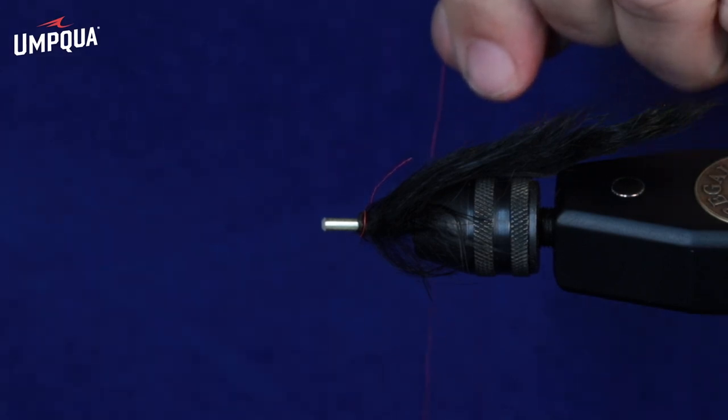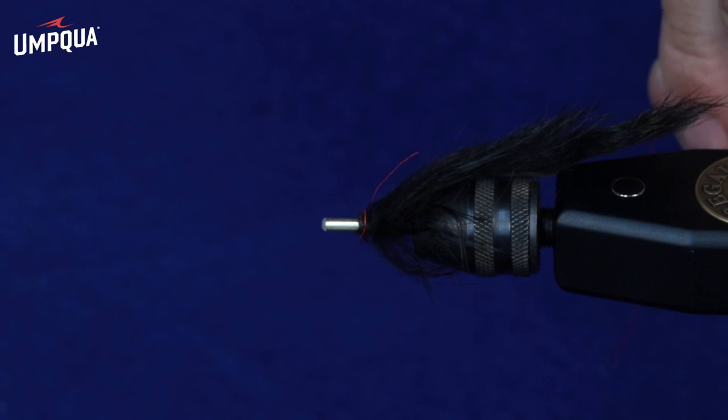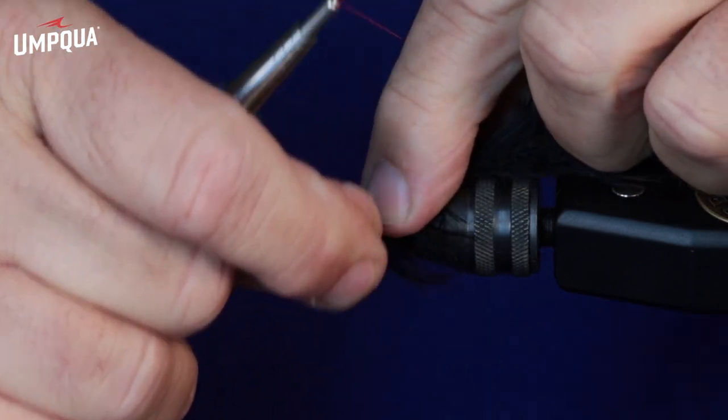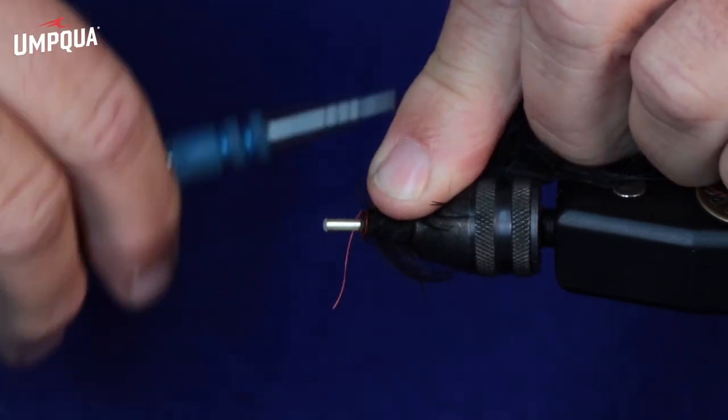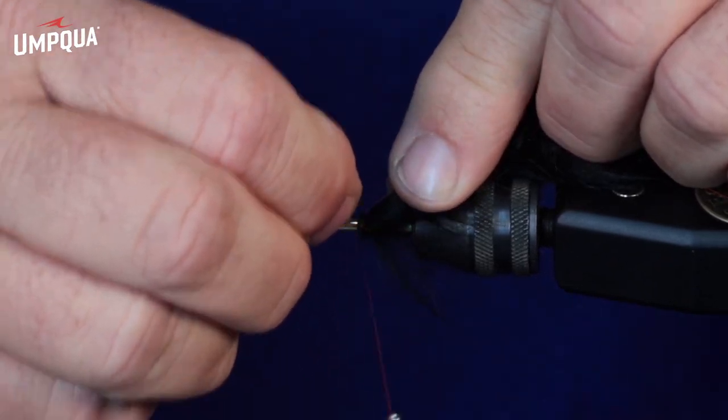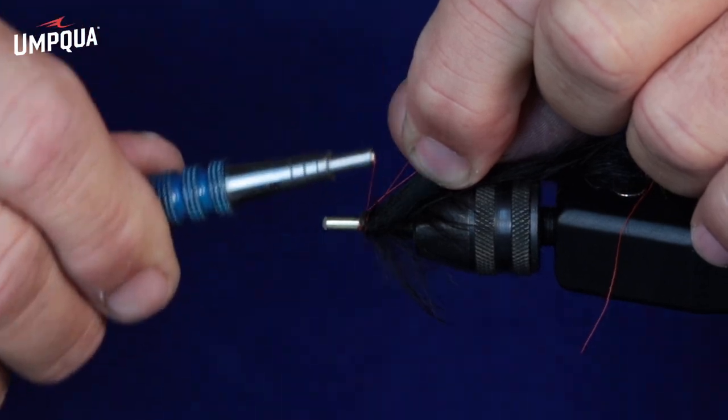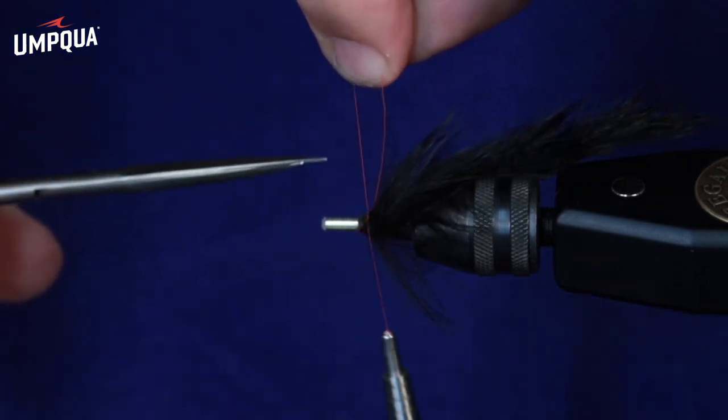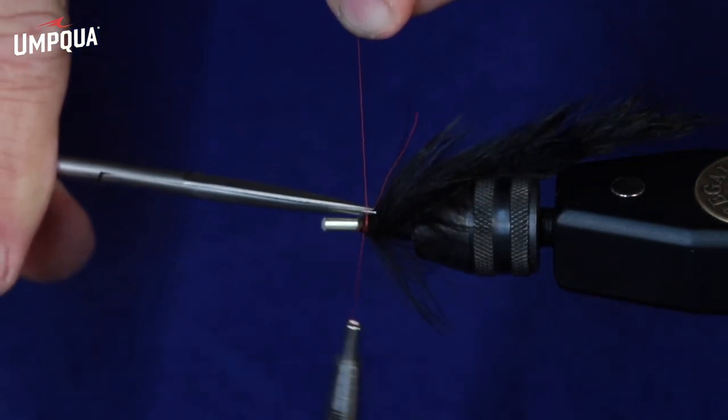Okay. Good fly tier always has to make a recovery here or there. Breaking the thread isn't life-threatening or life-ending. Get our thread started back up through the bobbin and make sure that when we save this, we're trapping both the tag end of the thread and the broken end of the thread. All right. We're back in business. Not a big deal. Just got to deal with it. Happens.